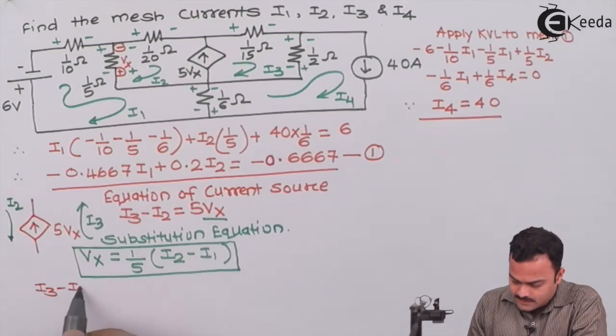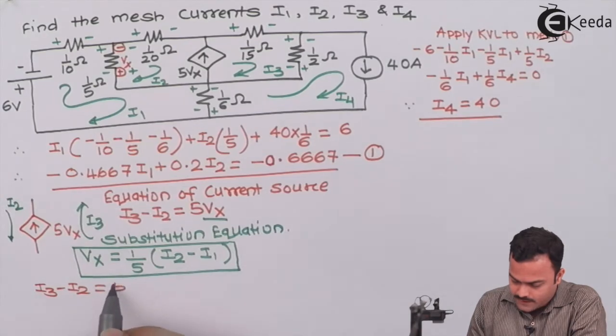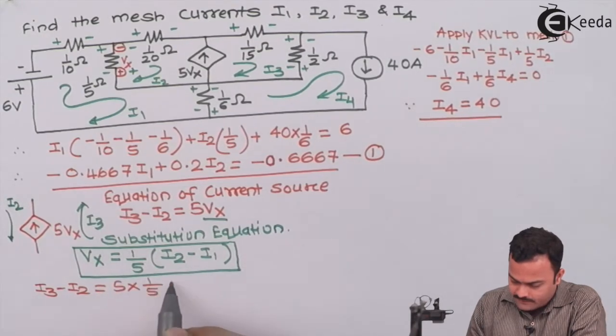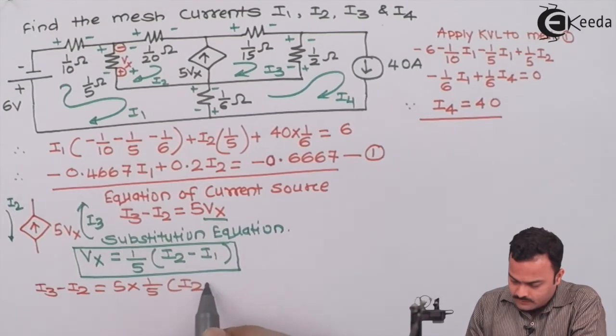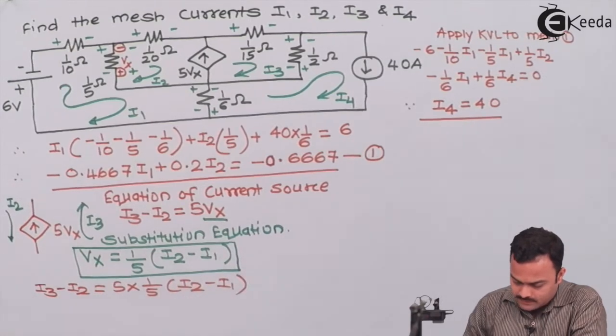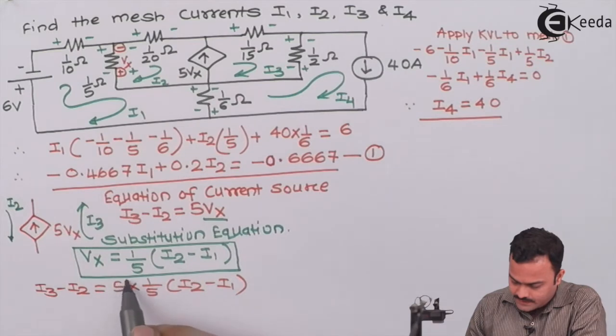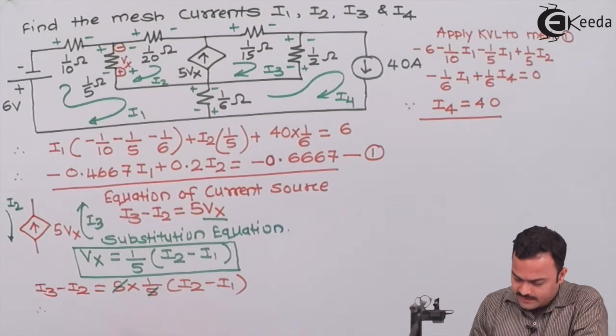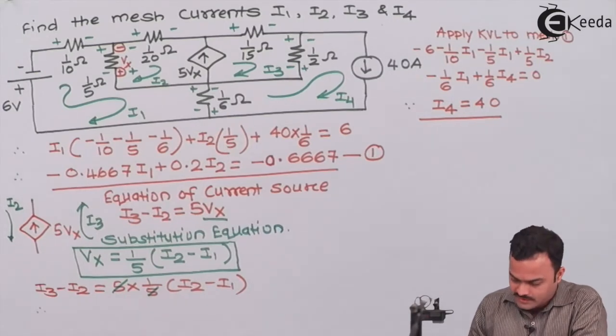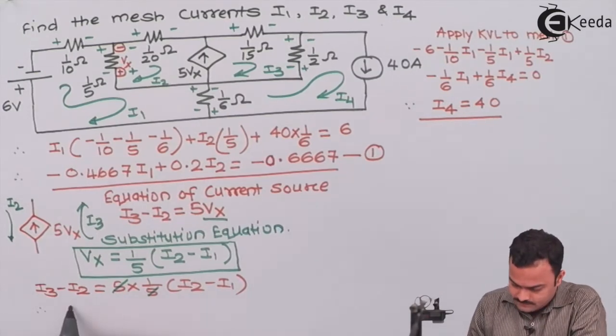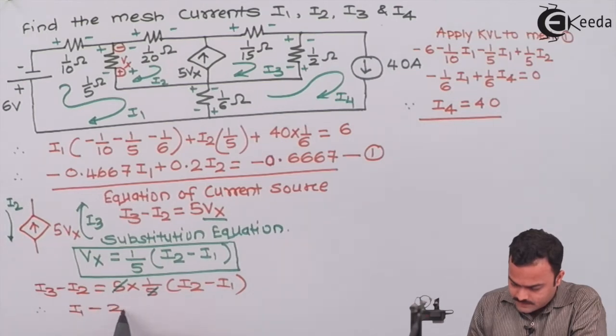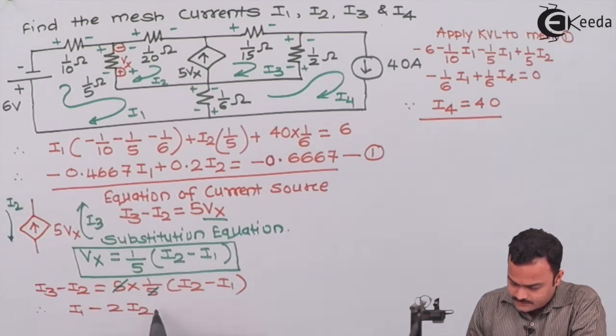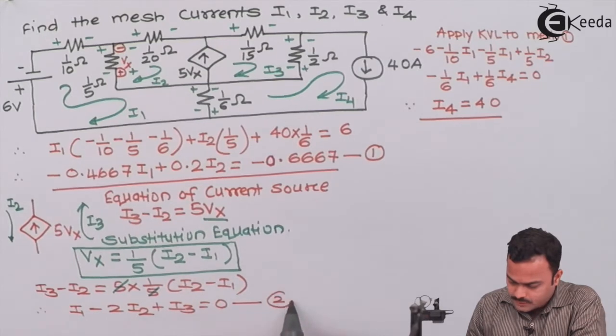This will be the substitution equation for the vx. If we put it we'll get an equation as i3 minus i2 equal to 5 multiplied by vx which is 1/5 times i2 minus i1. So this 5 and 1/5 get cancelled out and in the end after simplification we will get an equation as i1 minus 2 times i2 plus i3 equal to 0 as equation number 2.